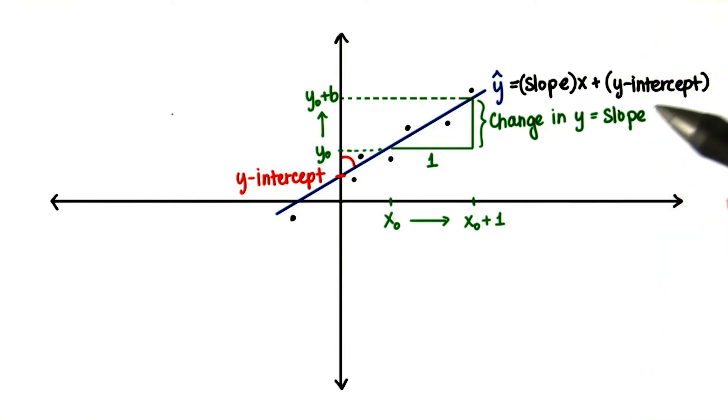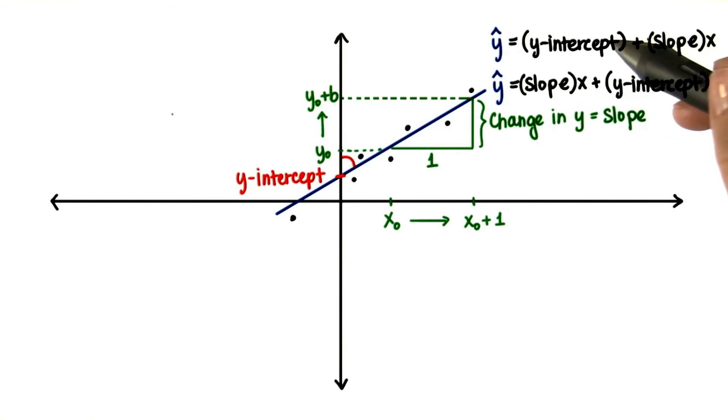The important thing is that once we decide on how to denote them, you have to remember that and continue to use that later. We can also write it like this, because addition can go in any direction. 2 plus 3 is the same as 3 plus 2. The slope times x plus the y-intercept is the same as the y-intercept plus the slope times x.